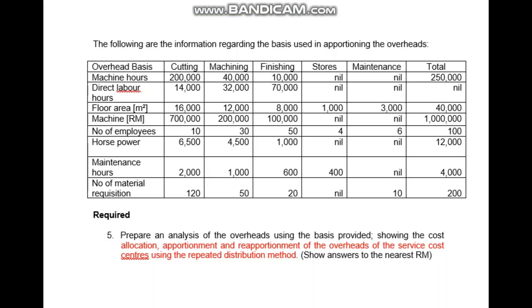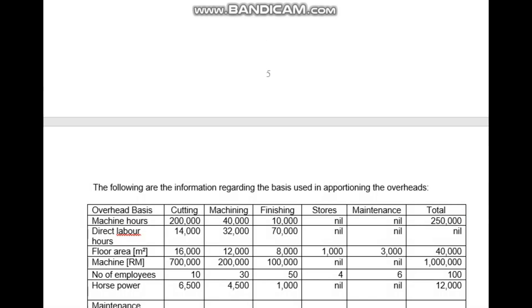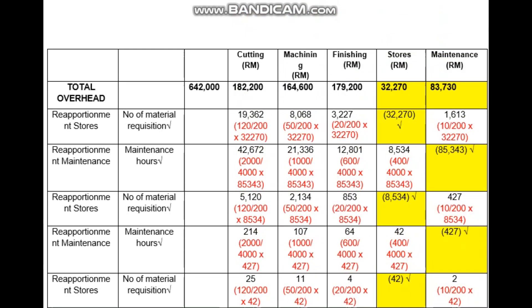Now we continue with the reapportionment exercise using the same table from before. According to the question, we already completed allocation and apportionment, and now we proceed to reapportionment using the repeated distribution method. Looking at the continuation of the previous example, we have cutting, machining, finishing as production departments, and stores and maintenance as service departments.